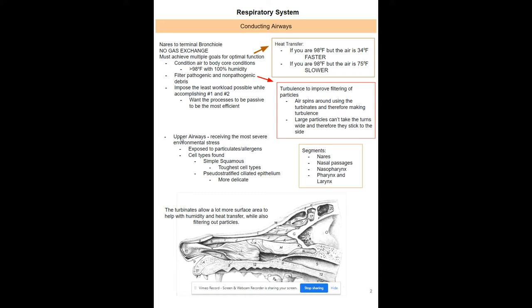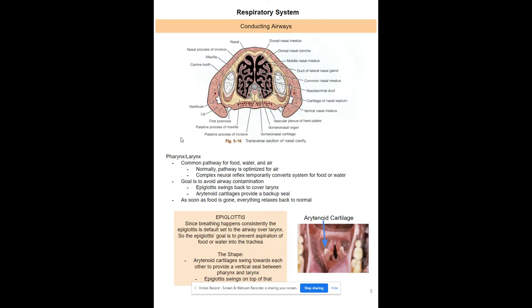If it's freezing outside at 34°F and your body temperature is 98°F, there's going to be a bigger heat transfer versus if it's 75°F out — then heat transfer is very minimal. Your turbinates also filter the air. They're scroll-like, so think of them like a maze: when you blow air through, large particles hit the wall and stick because they can't make the turns. This filters out large pathogenic and non-pathogenic debris — all while being energetically favorable.